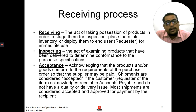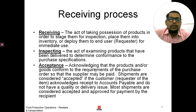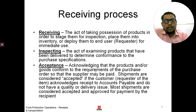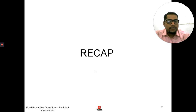The acceptance acknowledges receipt to accounts payable and confirms there is no quality or delivery issue. Most shipments are considered accepted and approved for payment by the recipient. In hotels and restaurants, it is the accounts department which deals with payments and acceptance of food. So these are the receiving procedures: first is receiving, second is inspecting, and third is acceptance.